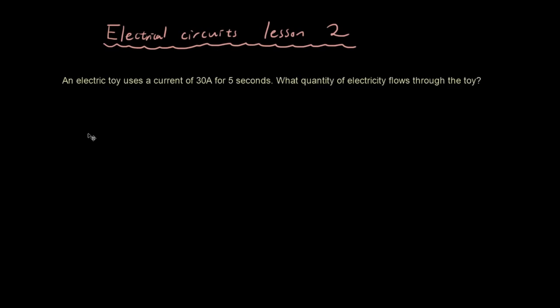So here is the question: an electric toy uses a current of 30 amps for 5 seconds. What quantity of electricity flows through the toy?